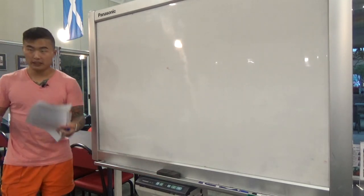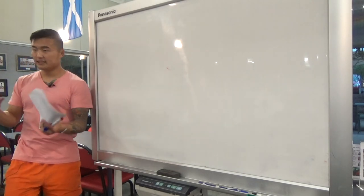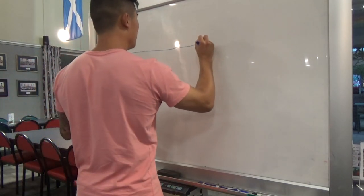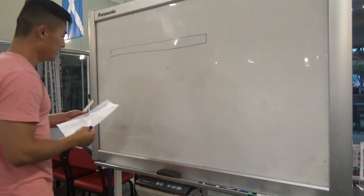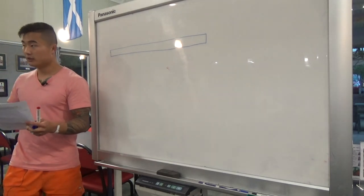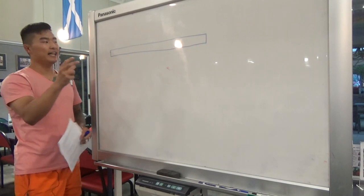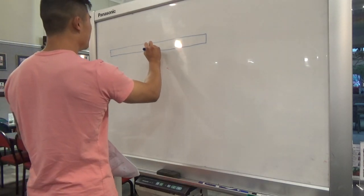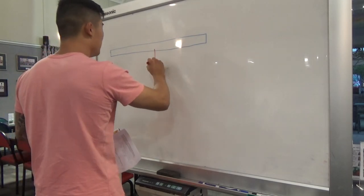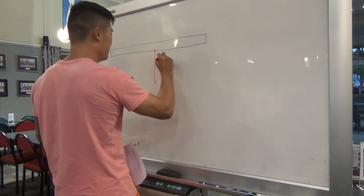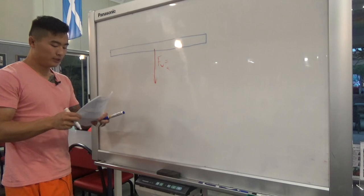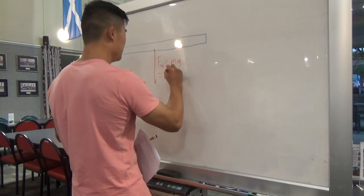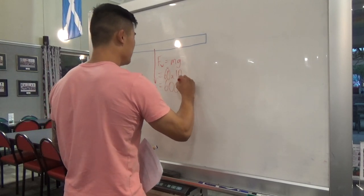For our problem, I'll draw a diagram. We have the plank. The keyword 'uniform' tells us it's symmetrical, so the 60 kg weight force acts at the center of gravity — right in the middle. The downward weight force Fw equals 60 kg times 10 equals 600 newtons.